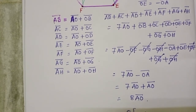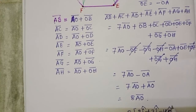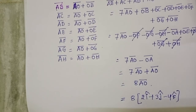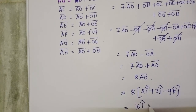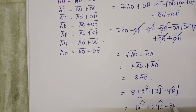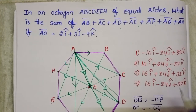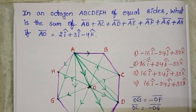The sum of the vectors equals 8 times AO bar. We know AO bar equals 2i cap plus 3j cap minus 4k cap, so the answer is 16i cap plus 24j cap minus 32k cap. The second option is correct.